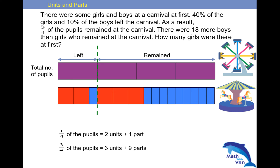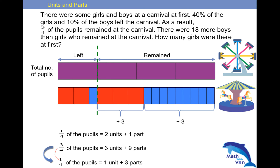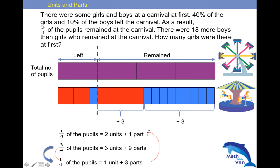Now here is where I want to draw your attention. Just imagine there are 3 groups — 3 quarters, 3 groups of them. I only want 1 group because I only want 1 quarter of the pupils. So in order to make it 1 quarter, I have to divide by 3. So 3 units divided by 3, and 9 parts divided by 3. Then what is 1 quarter? It becomes 1 unit plus 3 parts. So this is why I want to make it to 1 quarter — because I now have 2 expressions of the same 1 quarter, making equal comparison.